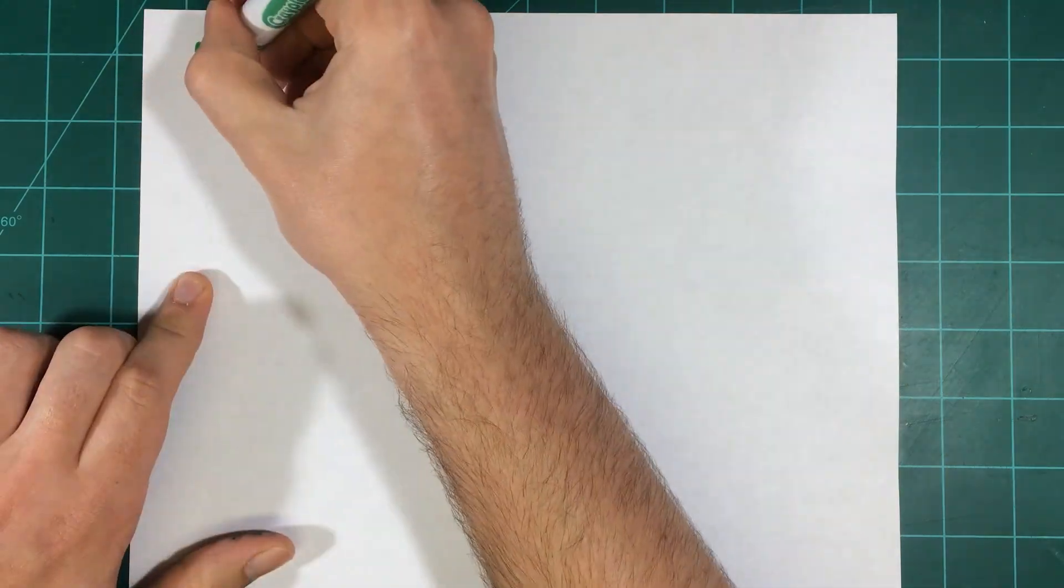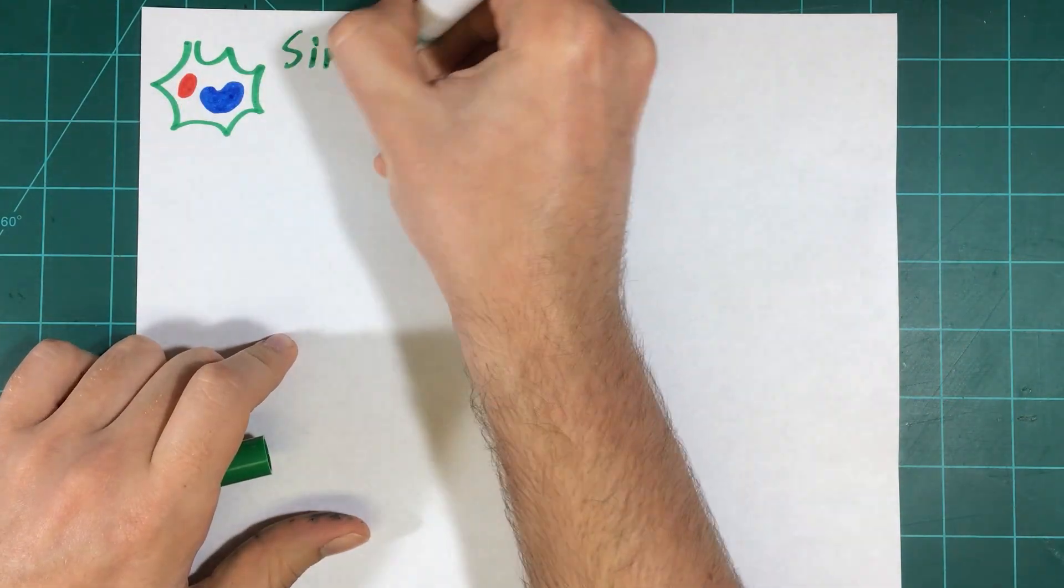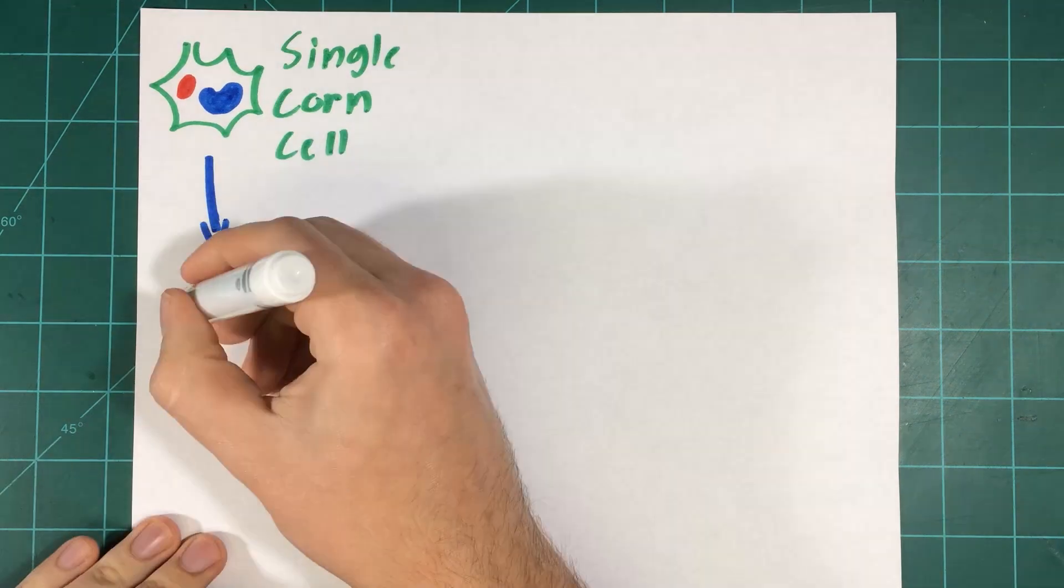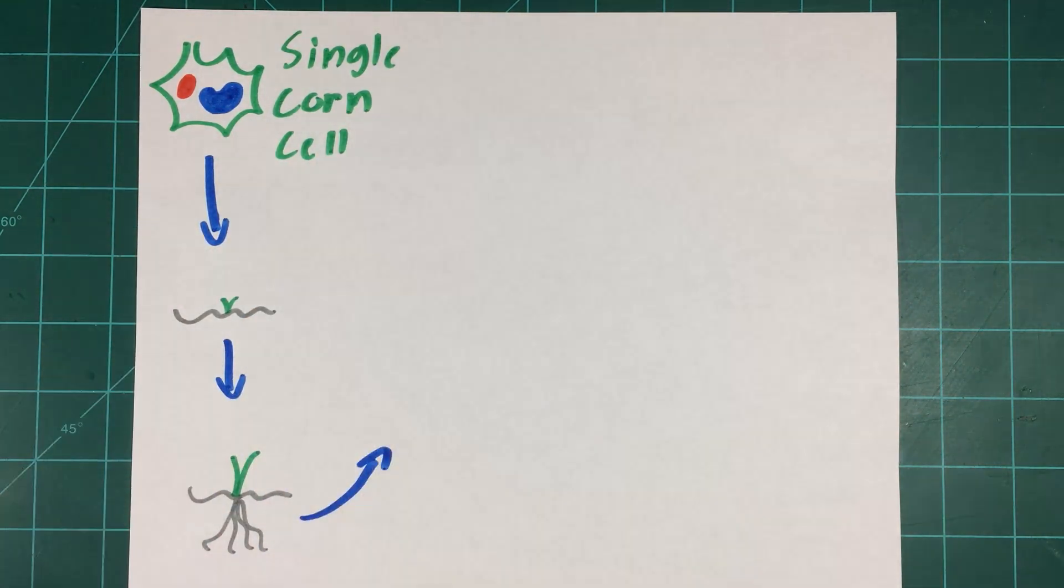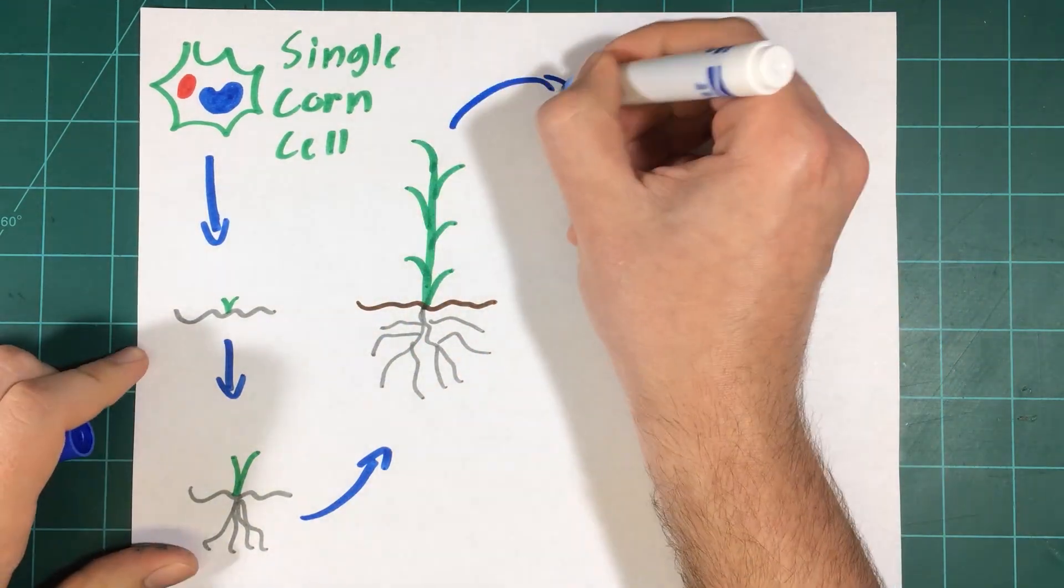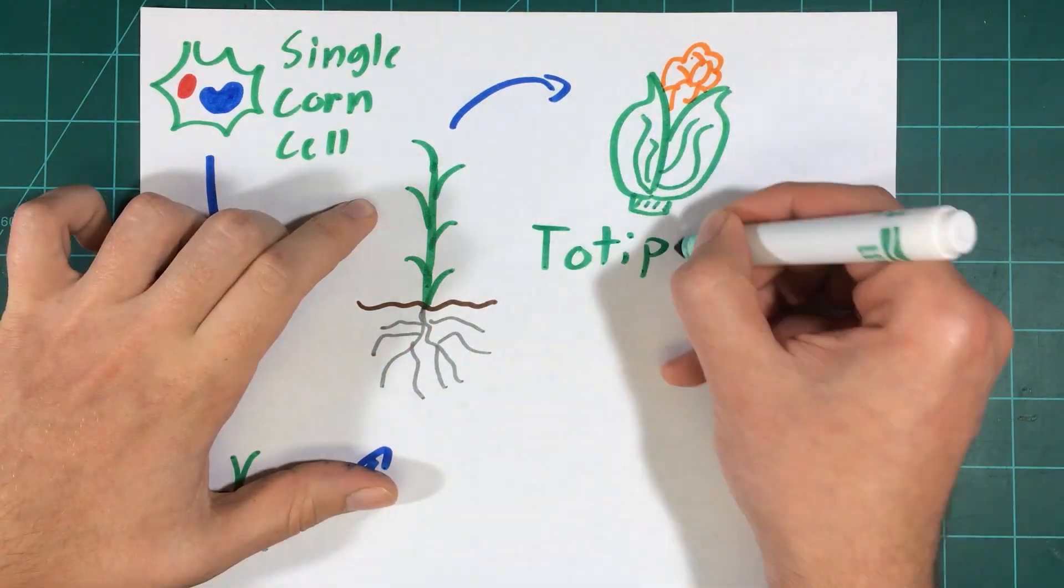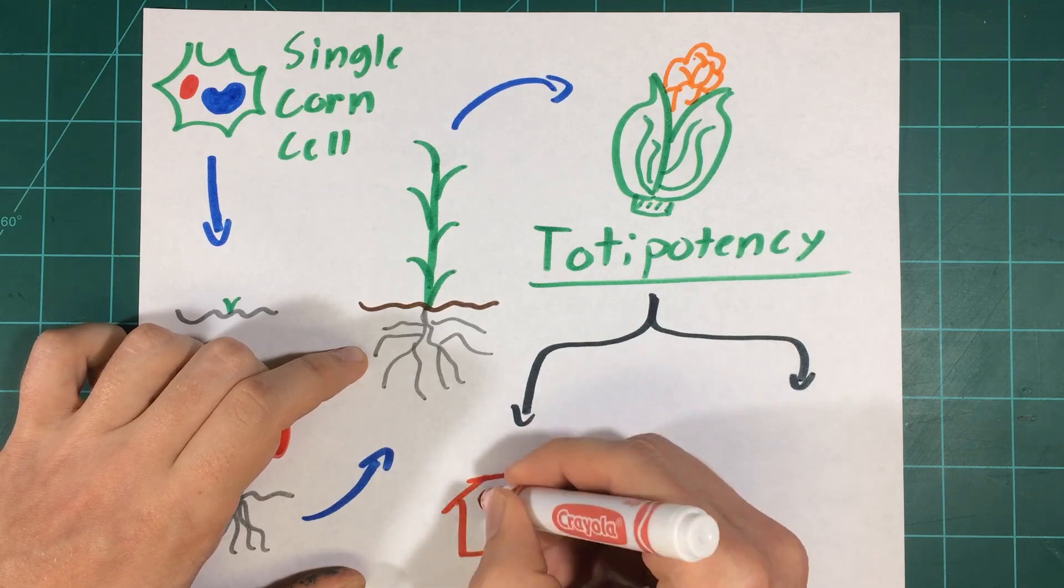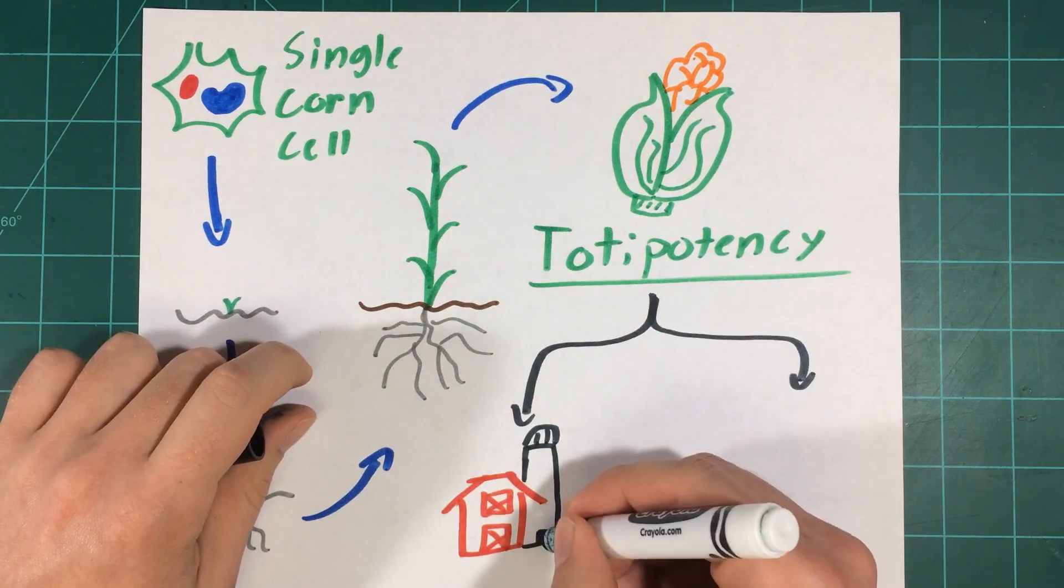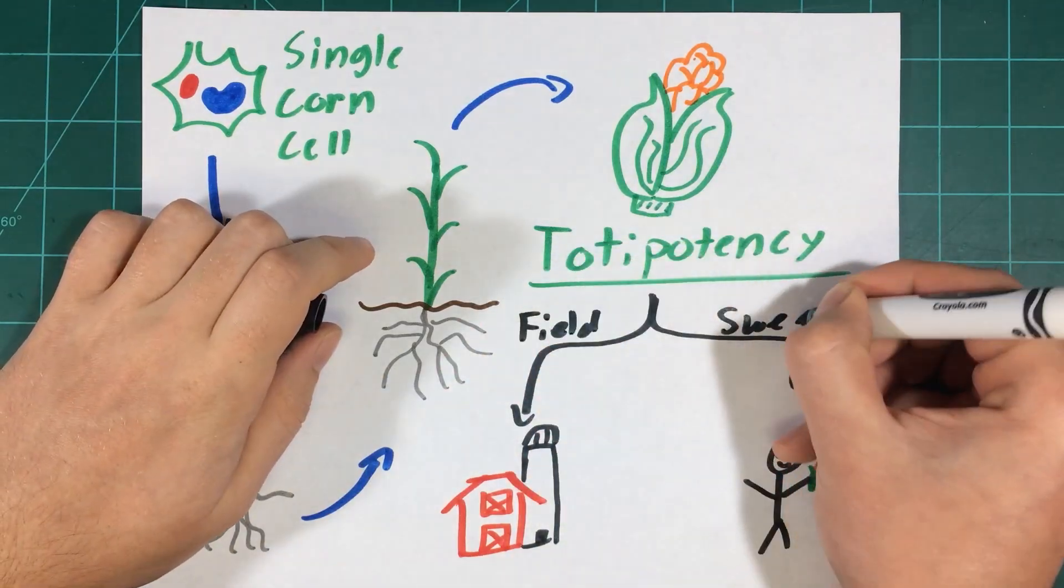Once the genes are in the cell, the cell can be easily grown into a healthy, full-sized plant. This ability for plants to be able to go from a single cell all the way to a mature plant at almost any time is called totipotency. The first generation of BT corn has now been successfully produced. Now we are free to cross the first BT corn into breeds of corn that have established commercial purposes, such as field corn for animal feed or sweet corn for human consumption.